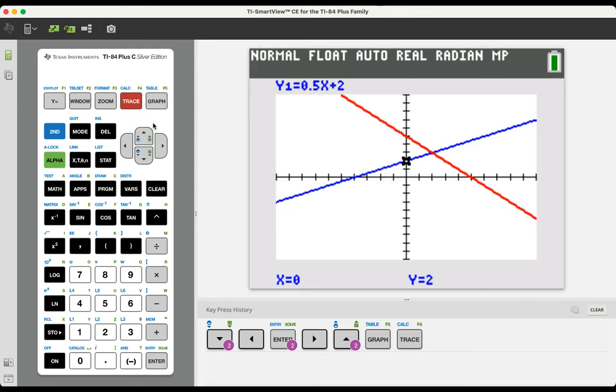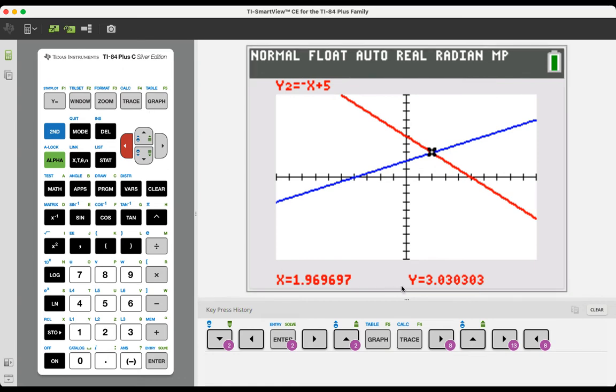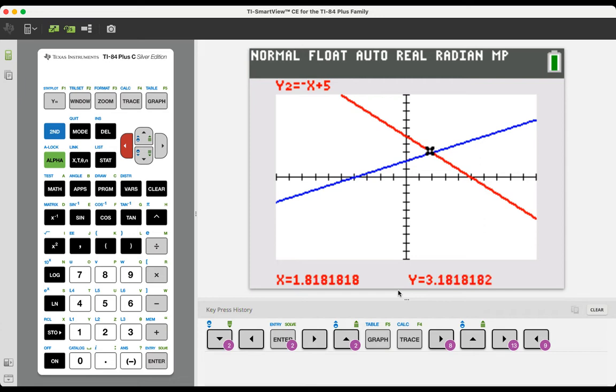I can press trace and arrow over the first equation, y1, and I can press the up arrow and go over the second equation, y2. Obviously, I am interested in that intersection point right there. Based on the fact that it's very close to 2, 3, it's a pretty reasonable guess that that's where the intersection point is going to be.